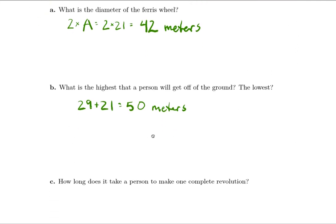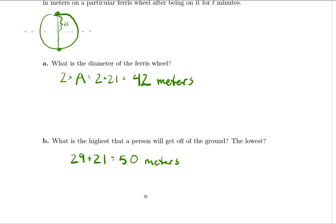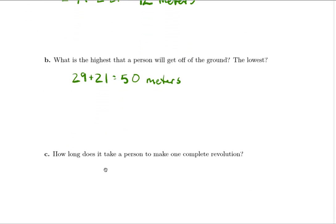And the last question here says, how long does it take a person to make one complete revolution? And I'm afraid that I can't get both the, so let me just write down the equation here. Since I can't see it. H of t is equal to 21 sine 2 pi over 3t plus 29. So how long does it take a person to make one complete revolution?